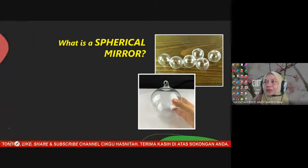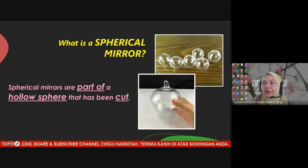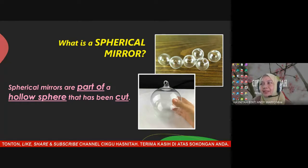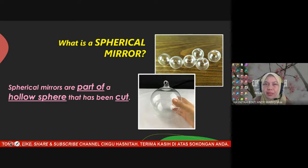A spherical mirror is a part of a hollow sphere that has been cut. When you cut this sphere into two parts, it forms a spherical mirror with two surfaces — one surface will be concave and the other will be convex.